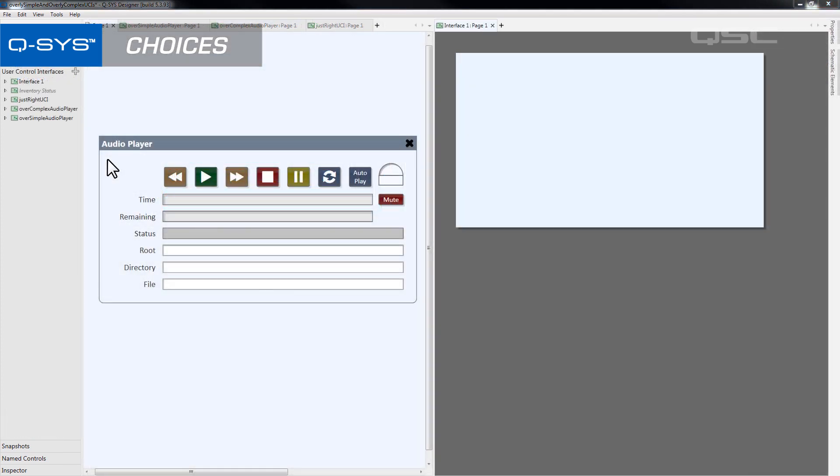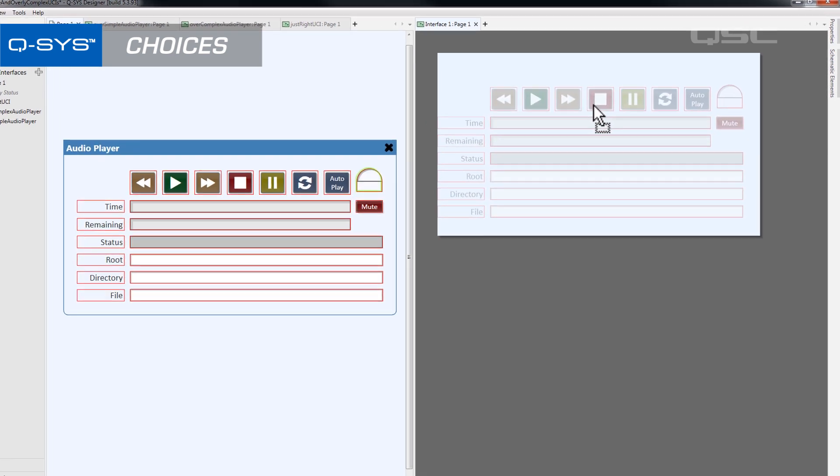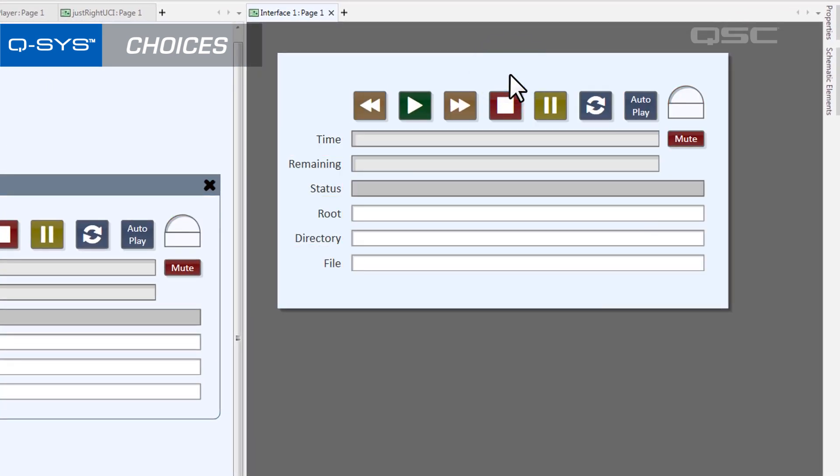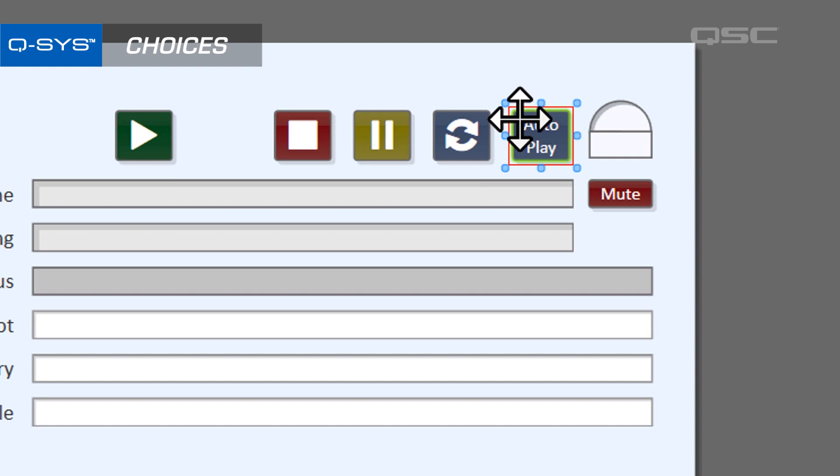Let's look at that audio player again, for instance. You may be tempted to drag all these controls onto a UCI so that the user can do whatever they like, and in some cases that may be fine. But if this audio player is just playing background music in the lobby of a hotel, for instance, does the receptionist really need the ability to fast forward or rewind the song? What about this autoplay button? This button tells the audio player to automatically start whenever the design is pushed to a Q-SYS core. Does the lobby receptionist know that?